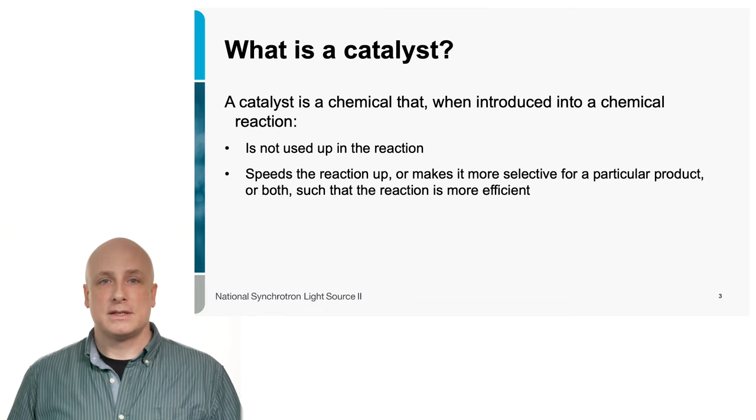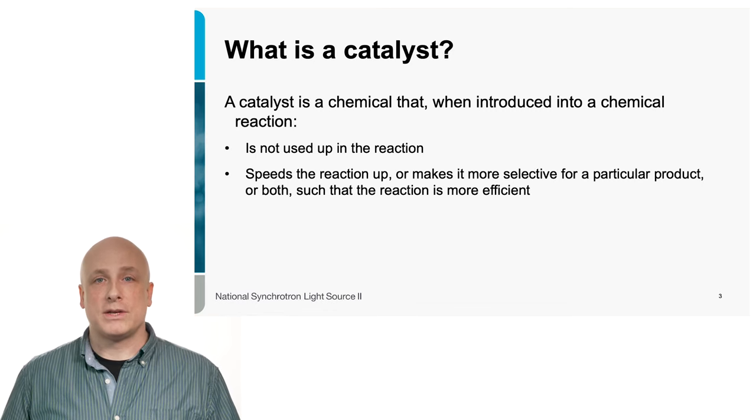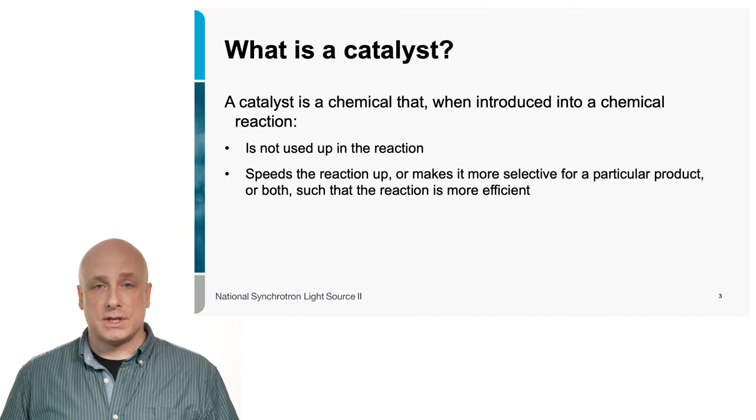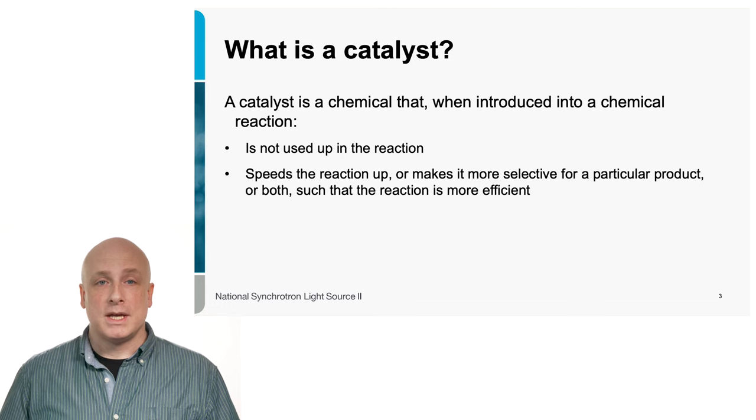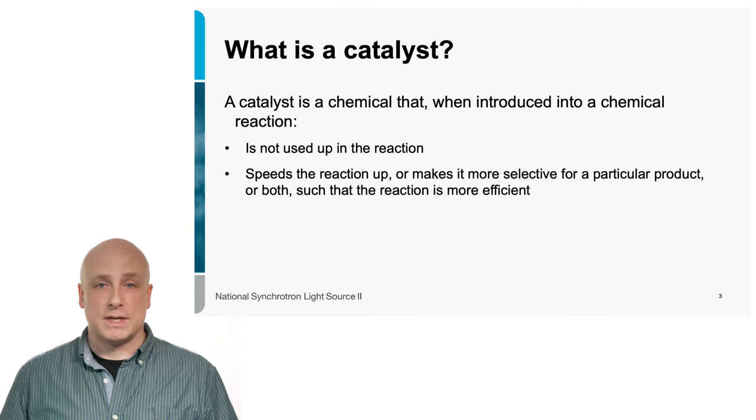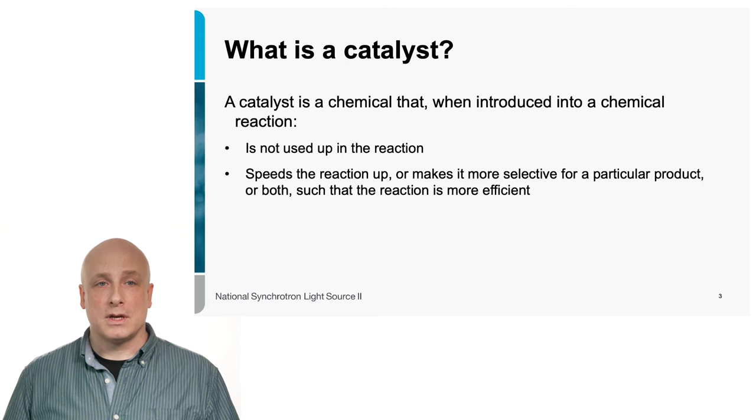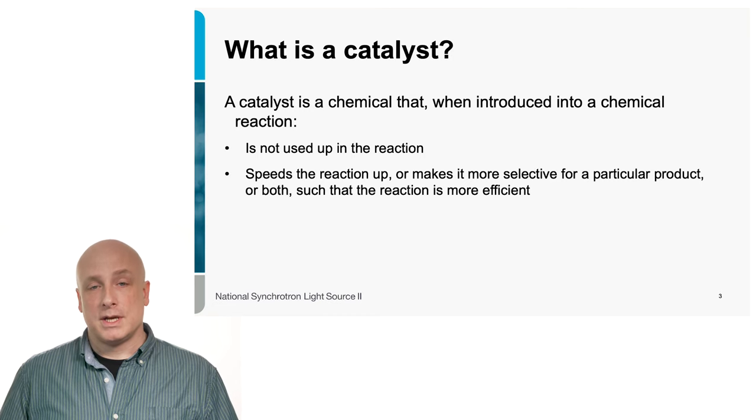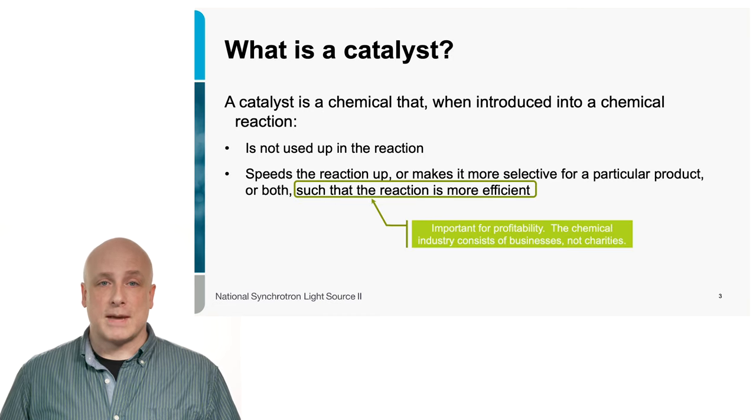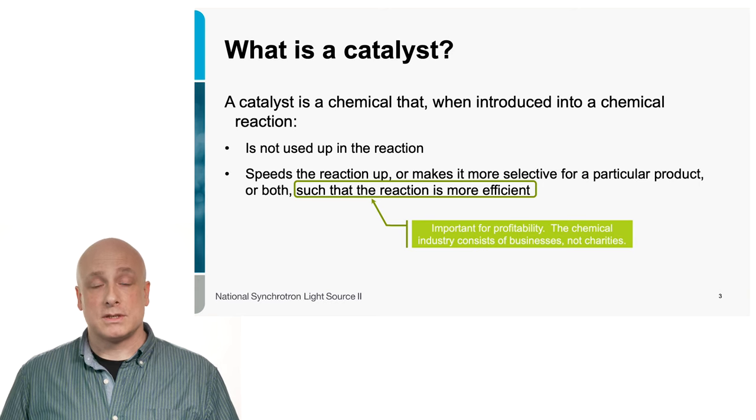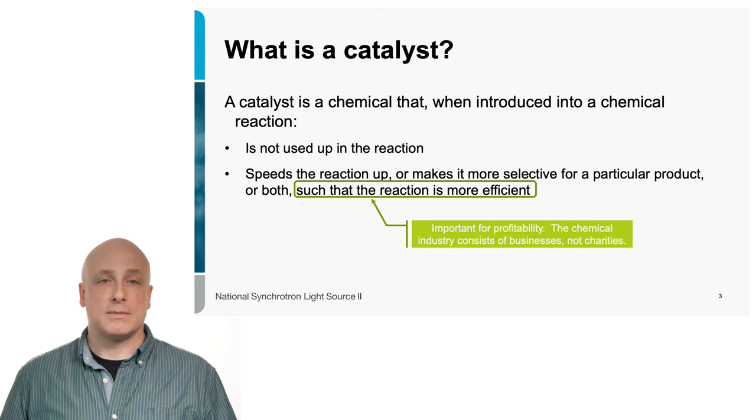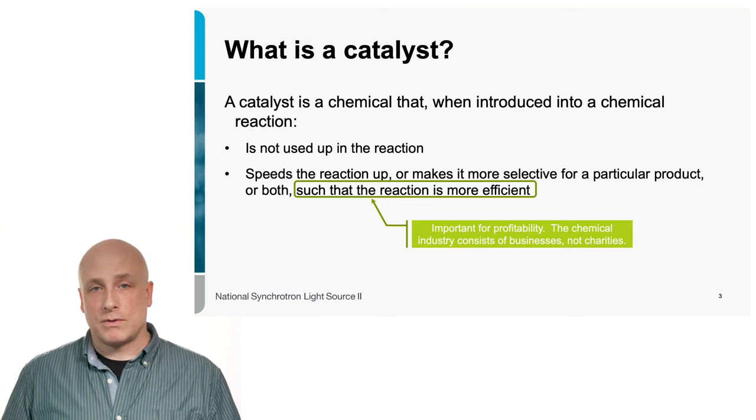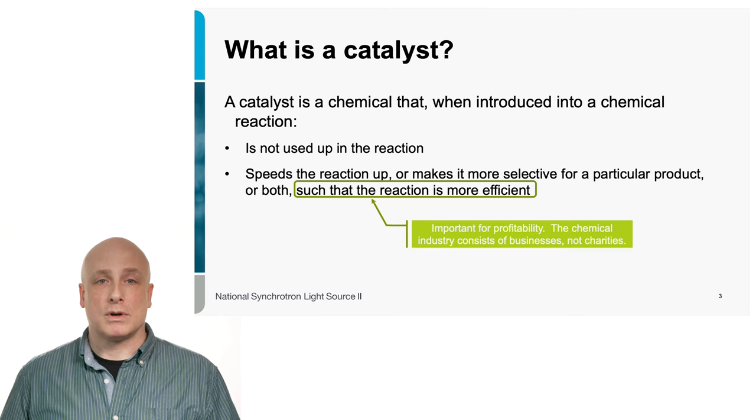So what exactly is a catalyst? Well, it is a chemical that, when introduced into a chemical reaction, first of all is not used up in the reaction. That is an important point. Ideally a catalyst would last forever, so you just feed in more reactants and more products will come out and the catalyst will stay. It also will speed up the reaction or make it selective for a particular product or both, ideally, so that the reaction is more efficient. This is the part that the chemical industry is most concerned with. The chemical industry consists of businesses, not charities. They are here to make money. So any time that they can make more product for the same amount of input means more money for them.